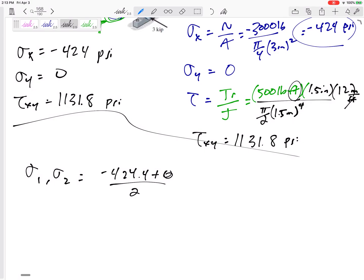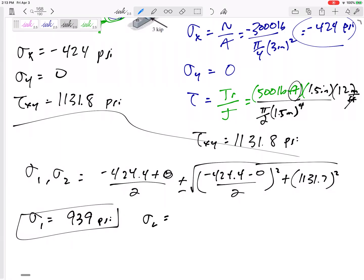Negative 424.4 minus 0 divided by 2 squared, plus 1131.7 squared, right there. So this would be Sigma 1, 939 psi. Sigma 2, negative 1360 something. May have rounded here to three significant digits right there.